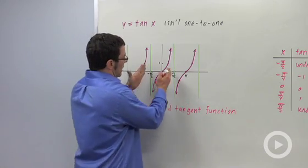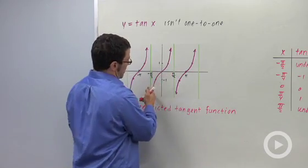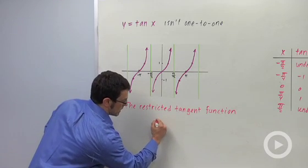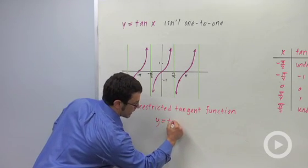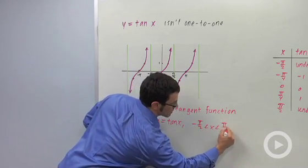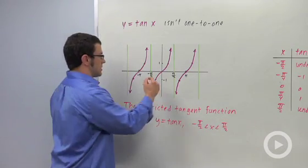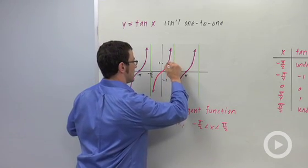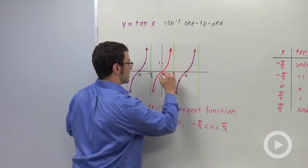So we pick the center period from negative pi over 2 to pi over 2, and that's how we define the restricted tangent function: y equals tan x for x between negative pi over 2 and pi over 2. And that's just this piece of it here. Let me just trace over. This is the restricted tangent function.